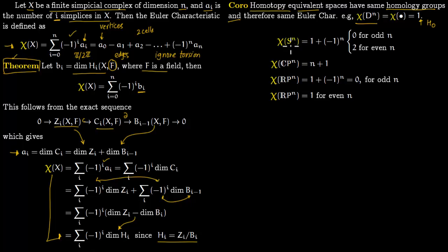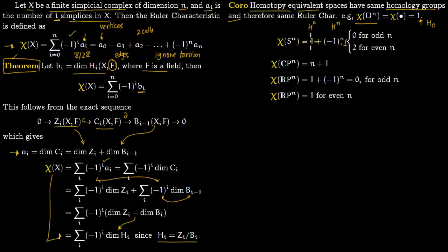Now some examples. The Euler characteristic of a sphere S^n: the sphere only has non-zero homology groups in dimension 0 and dimension n, each being a single copy of the field. So you get 1 (from dimension 0, multiplied by (-1)^0 = 1) plus (-1)^n (from dimension n). This becomes 0 for n odd, and 1 + 1 = 2 for n even.